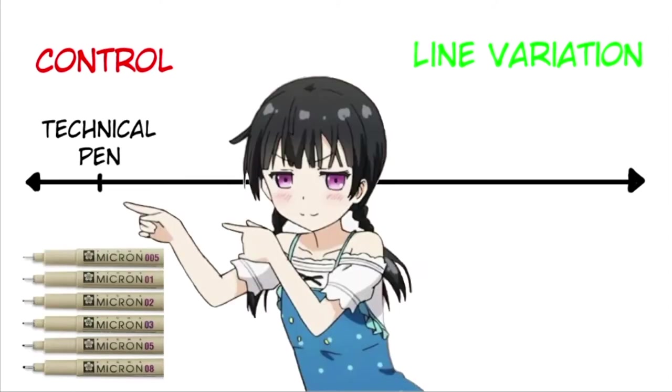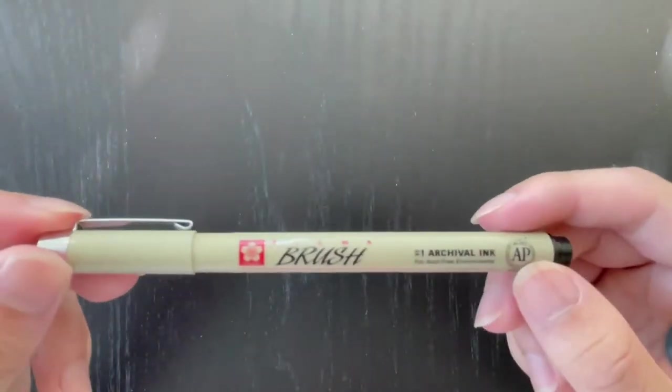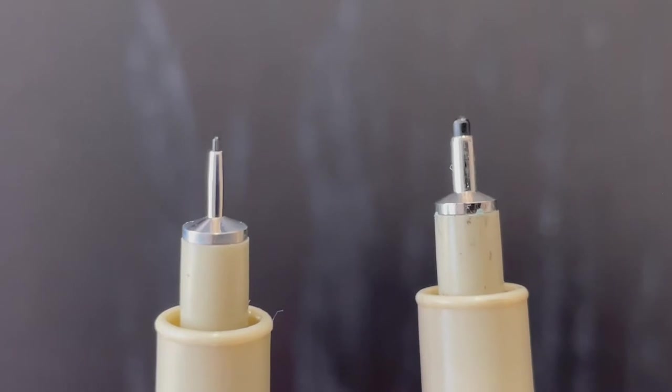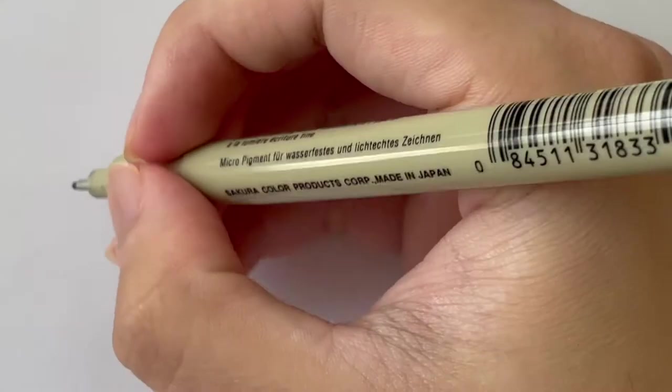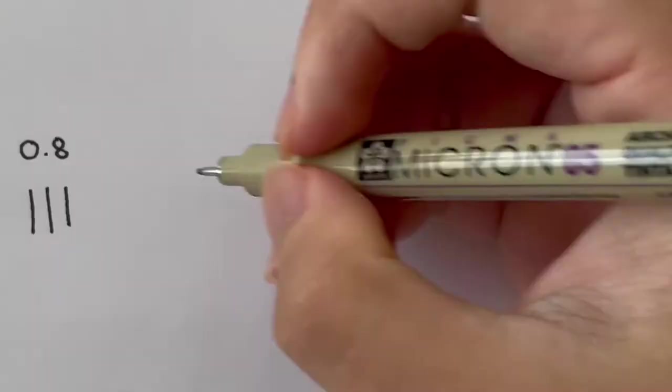On one spectrum you have tools that are easy to control with consistent lines like technical pens. Technical pens can come in different thicknesses for either fine details or thicker lines. So you can mix and match line thicknesses by switching pens of different measurements and thicknesses but you can't exactly vary your lines in one stroke.